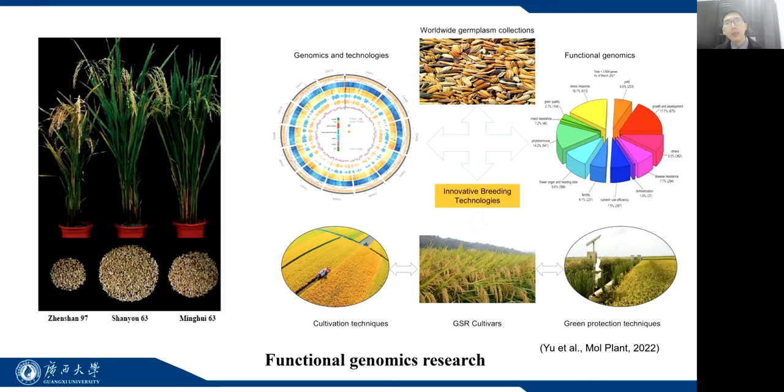Zhenshan and Minghui represent the two major subgroups of indica, as they have many complementary traits. Based on genetic populations generated from these two accessions as parents, some important genes were cloned.